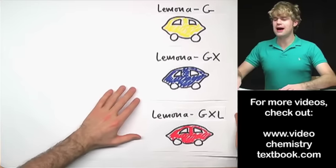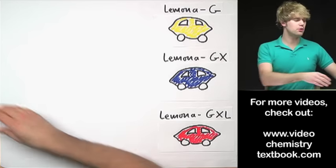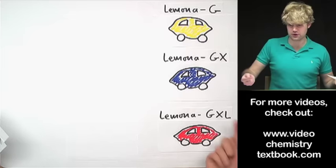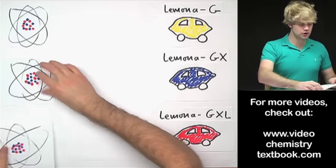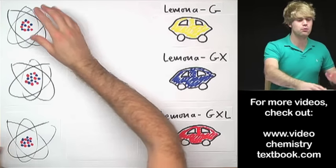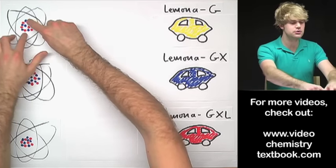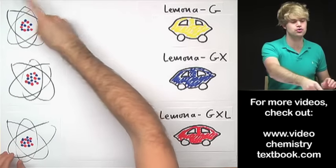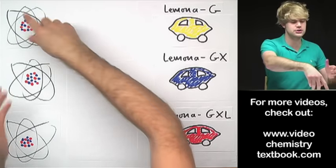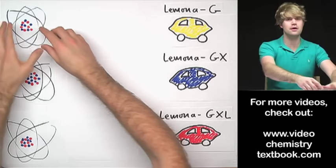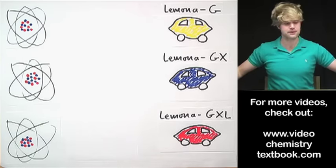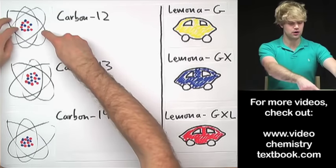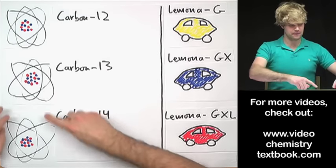I want to use this analogy now to talk about the same thing but with atoms. I want to now introduce you to three models of carbon, just the way there are three models of Lamona. Here are the drawings of each one of them and what we're particularly concerned about is the nucleus. I'm using these red dots to symbolize protons and I'm using the blue dots to symbolize neutrons. The swirly circles are supposed to represent electrons that are buzzing around the nucleus but we don't really want to worry about that too much right now. Anyway, these three models of carbon are carbon-12, carbon-13, and carbon-14.